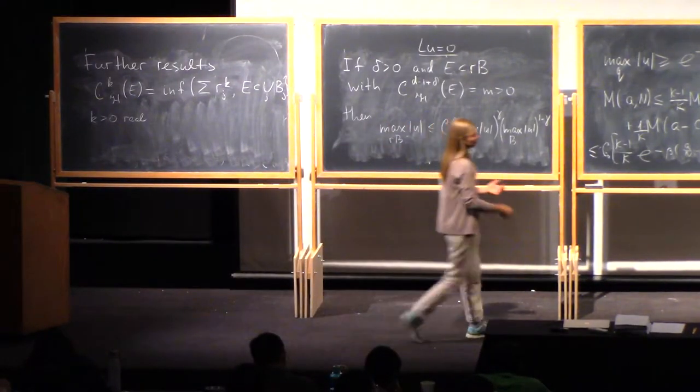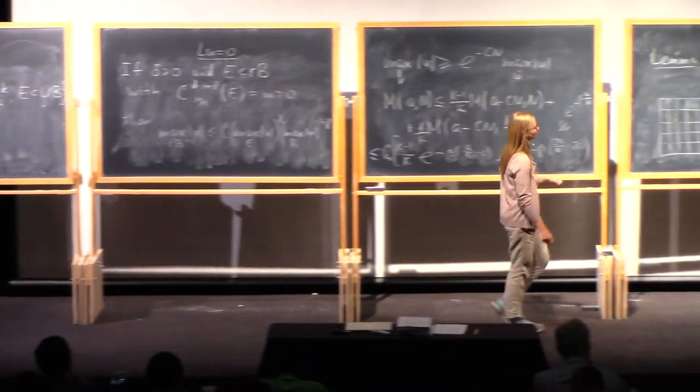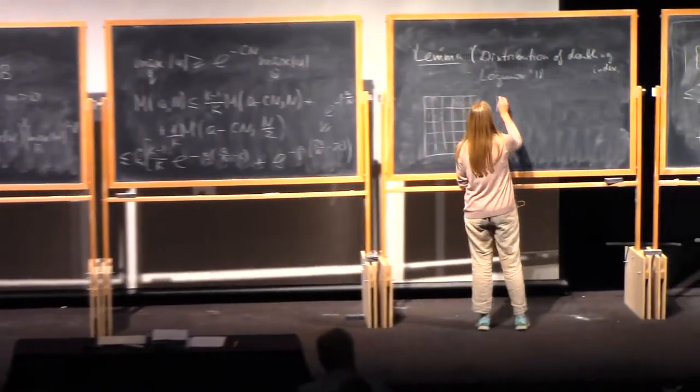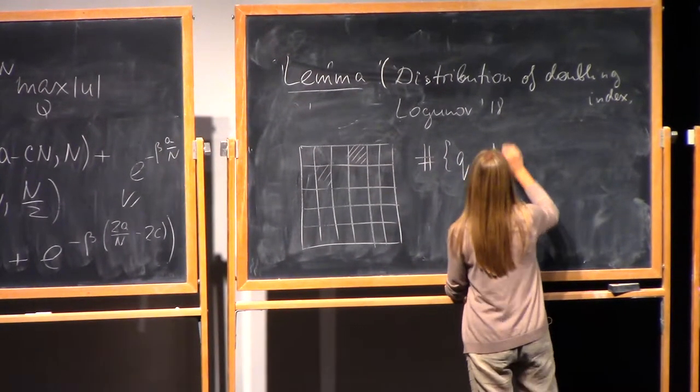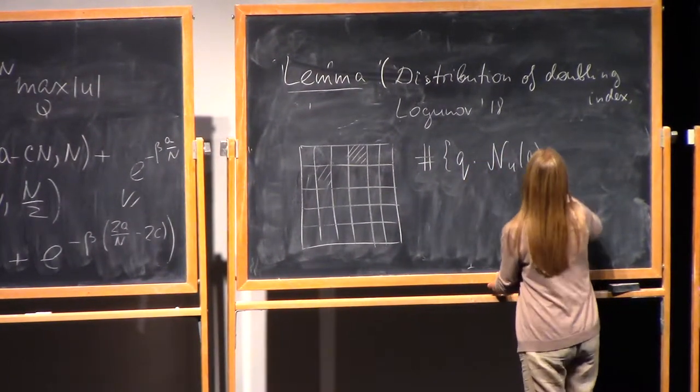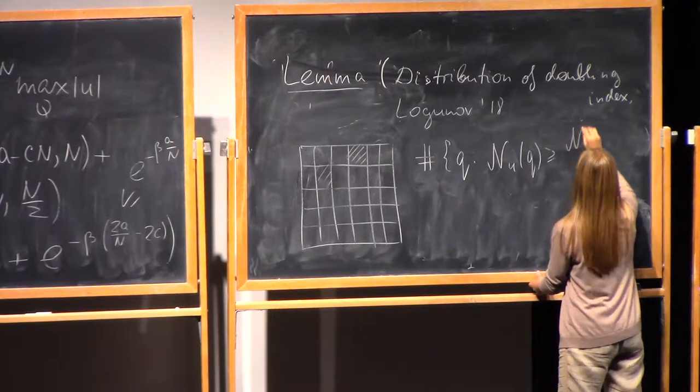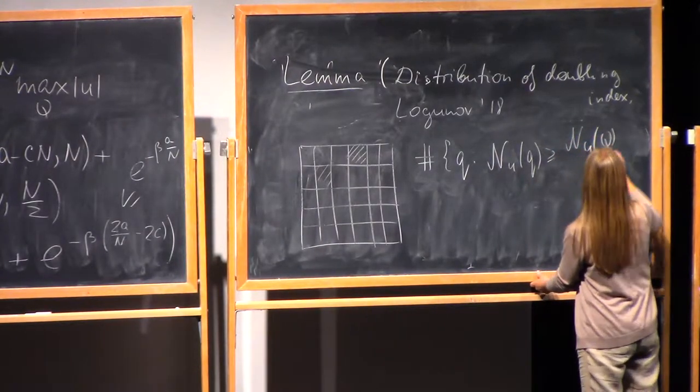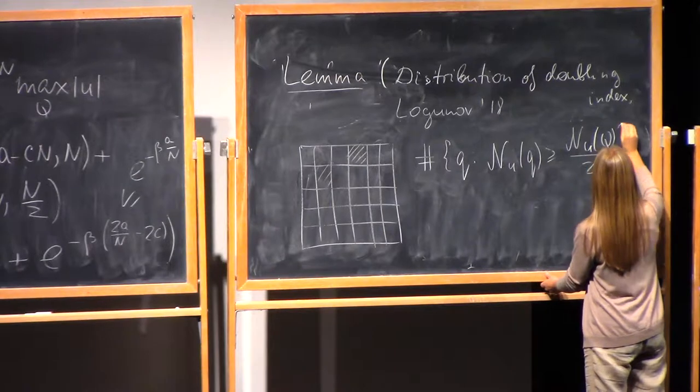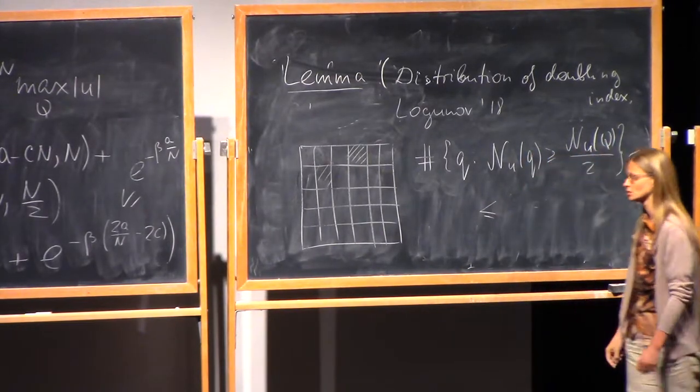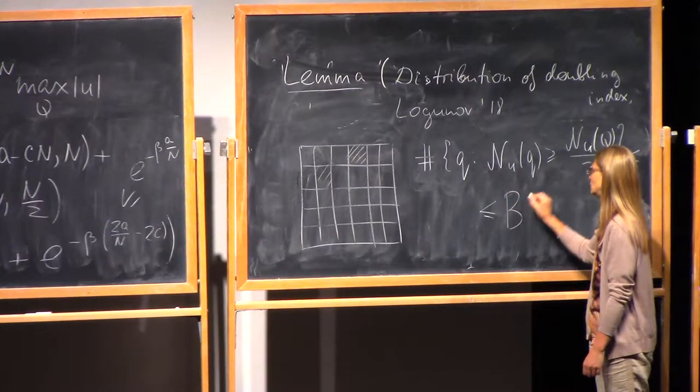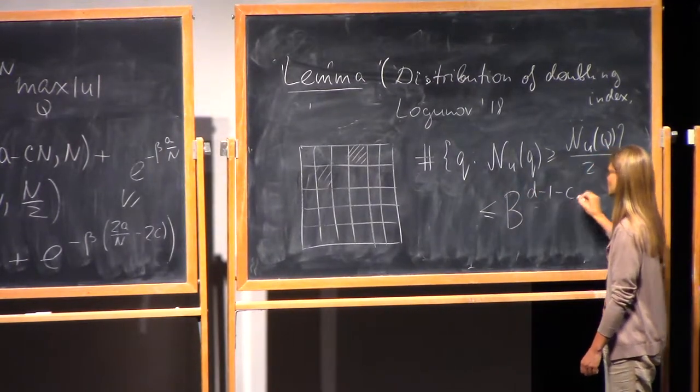But the truth is the number of Q where the doubling index is larger than one half of the initial one is like that.